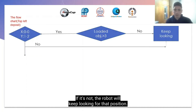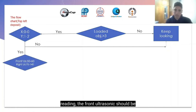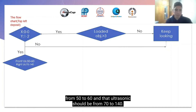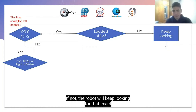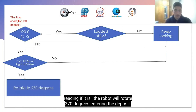If it's not in that position, the robot will keep looking for it. If it is, the robot will check the ultrasonic's reading. The front ultrasonic should be from 50 to 60 and the right ultrasonic should be from 70 to 140. If it's not, the robot will keep looking for that exact reading. If it is, the robot will rotate to 170 degrees, entering the deposit.